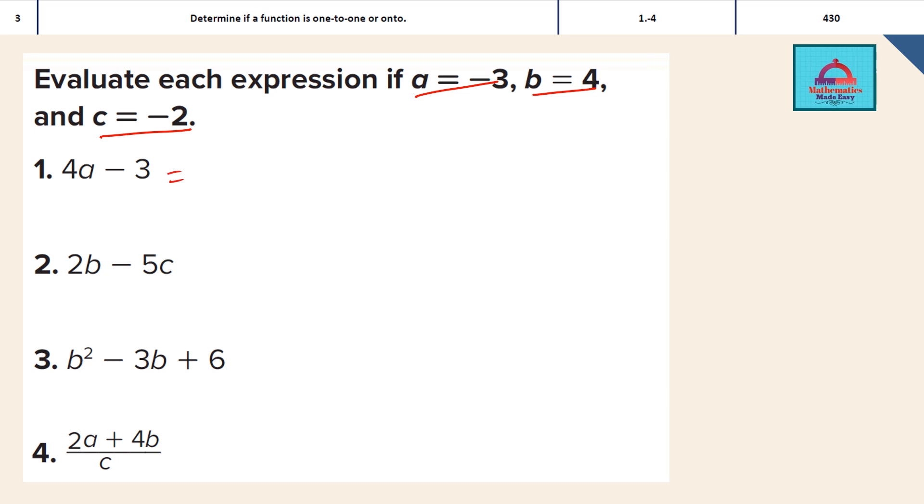Let's calculate 4a minus 3. The variable given is a, so I am going to replace a with minus 3. This becomes 4 multiplied with minus 3 minus 3. So 4 multiplied with minus 3 is going to give us minus 12, and we subtract minus 3. The result is minus 15. Remember these two are negative integers, so when I combine them I add 12 plus 3 and take the common minus sign.